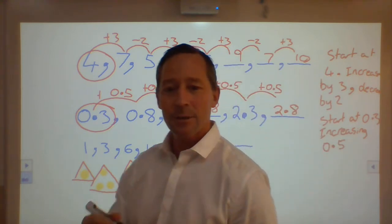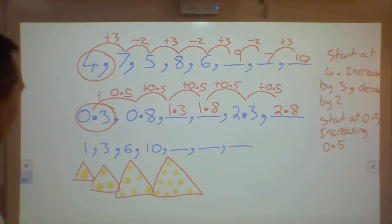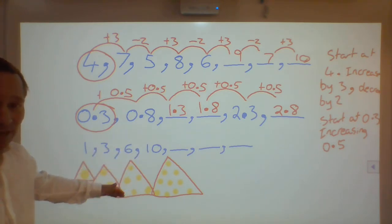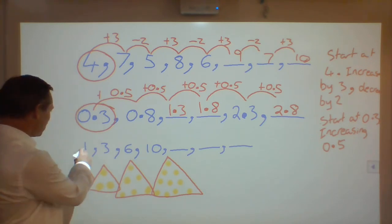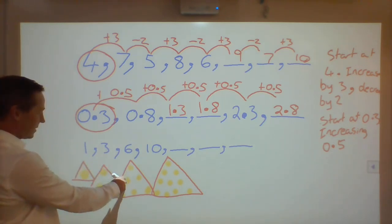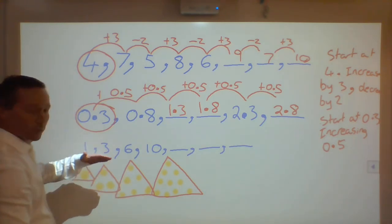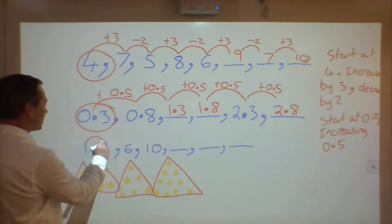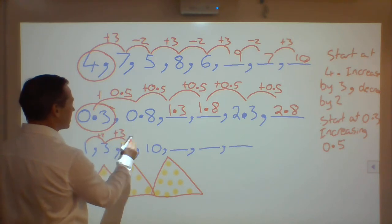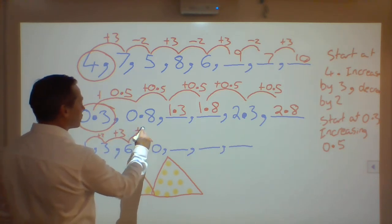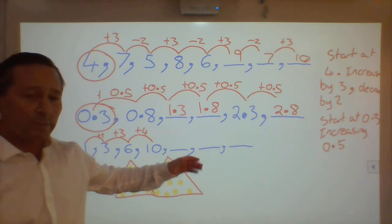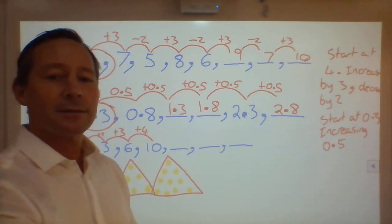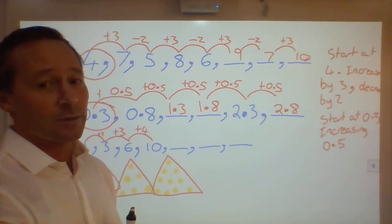This next sequence, a little bit different. See if you can work this one out. 1, 3, 6, 10. Here's another one. Triangle numbers. 1, 3, each time. 1 to 3, plus 2, 3 to 6, plus 3, 6 to 10, plus 4. I'm going to continue this, what would be my next number? See if you can solve that one. Thank you.